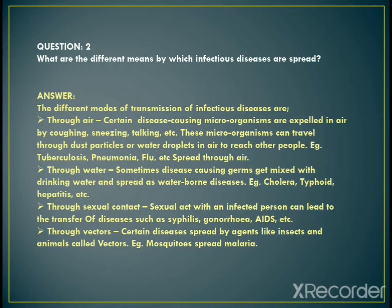The last means is through vectors. Vectors are animals or insects which can carry infectious organisms, that is, disease-causing organisms. Certain diseases spread by agents like insects and animals are called vector-borne diseases. For example, mosquitoes can spread malaria. Malaria is caused by a microorganism called Plasmodium, which is carried by mosquitoes and infects people with the disease-causing microbe.